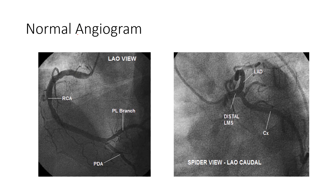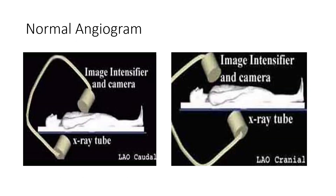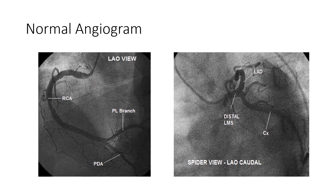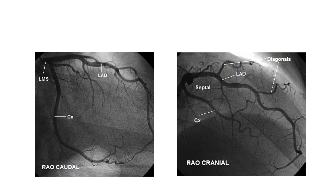Here's an example of a normal angiogram. I'm not expecting you to know all the different angles — the caudal and cranial views. That's really super specific stuff, but this gives us a way to look at different views of the heart so we can orient the camera to look at different parts of the coronary circulation. As an example, the normal right system is here with its different branches including the posterior descending, and in most people it's right-dominant. Then we have the spider view which looks down on the heart, showing us the LAD and the circumflex. We also have the aorto-caudal view showing the LAD, circumflex, and the LMS — the left main system.